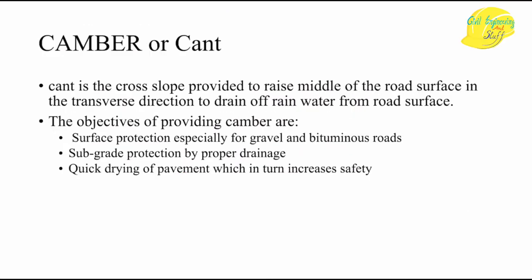The next cross section element is camber or cant. Camber is the cross slope provided to the road surface in the transverse direction to drain off rainwater from the road surface. It is the minimum slope that must be provided regardless of whether the road is in a plain area — a minimum slope is required to drain water off the road surface.